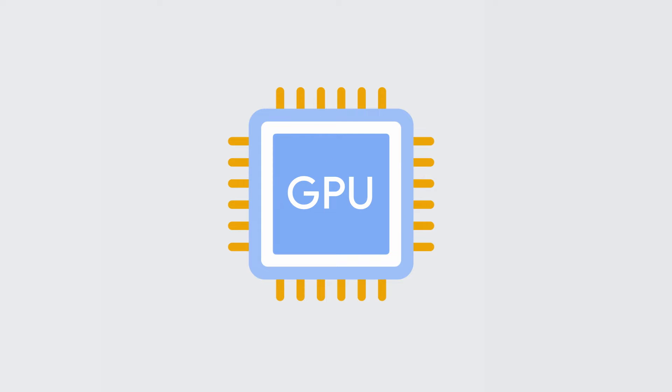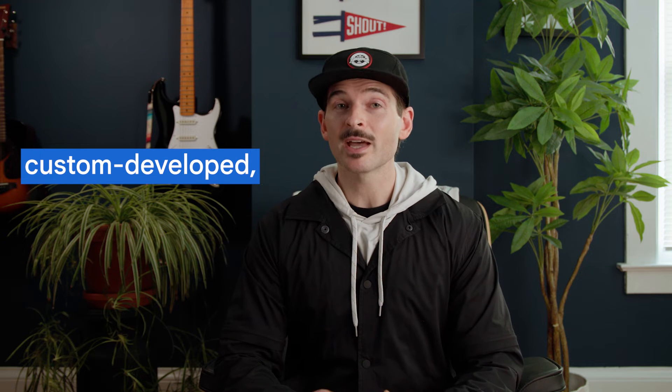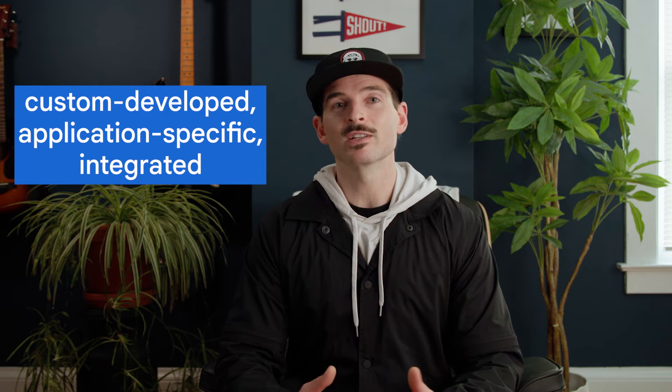This is where the Tensor Processing Unit, or TPU, comes in — Google's custom-developed, application-specific integrated circuit. Try to say that five times fast. It's used to accelerate machine learning workloads.